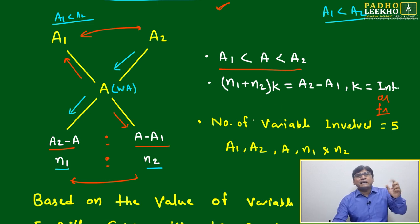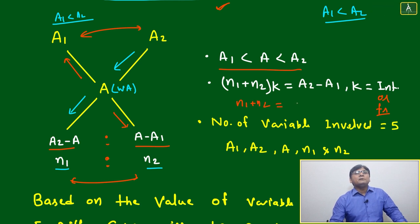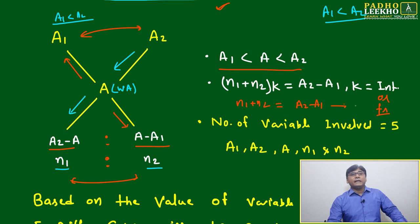But one thing is sure: in any particular case, based on any factor of multiplication, one case will be 100% sure when n1 plus n2 will be equal to A2 minus A1 for any particular value k. That is 100% sure, it cannot go beyond that.